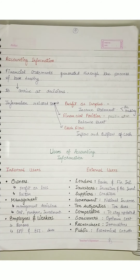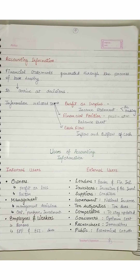So now we have come to know about accounting information — who can be its users: internal as well as external users. Now one more thing about accounting information is its qualitative characteristics. First, accounting information should be reliable — verifiable and truthful, with no deliberate errors. Second is relevance — it should be relevant, meaning it should serve the purpose for which the information is given and help derive the required decisions.